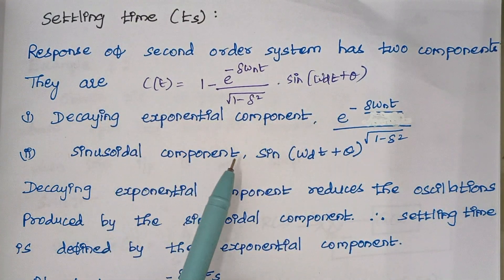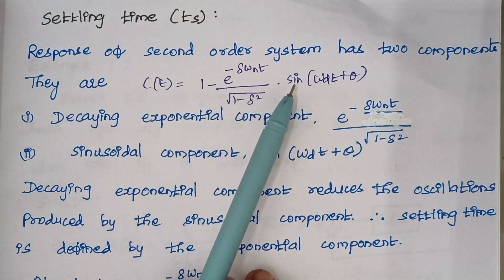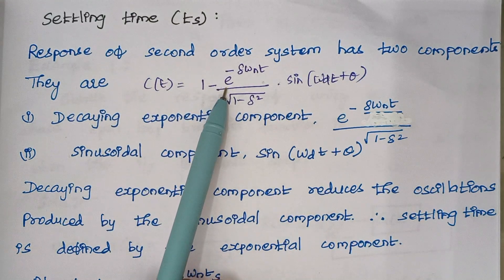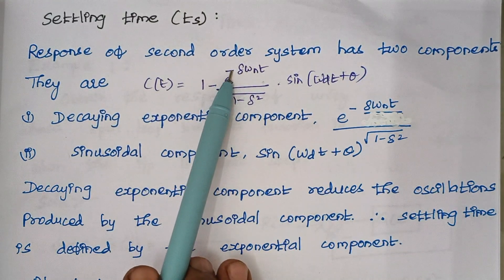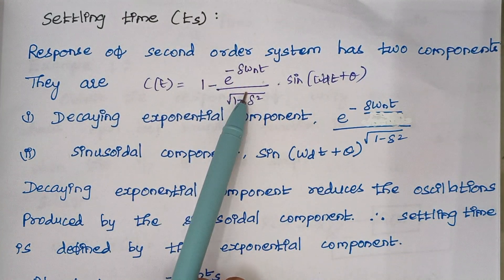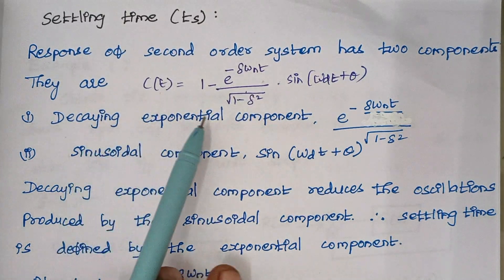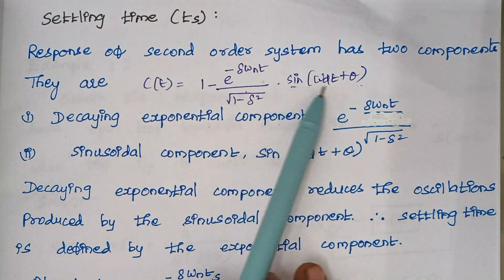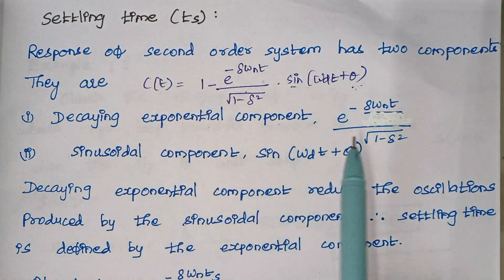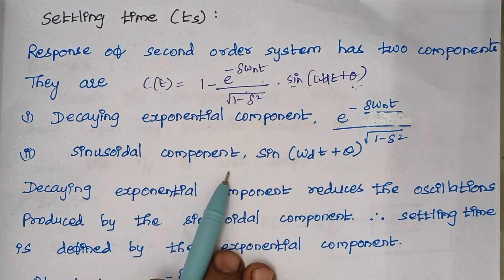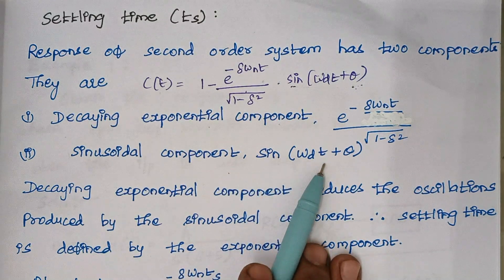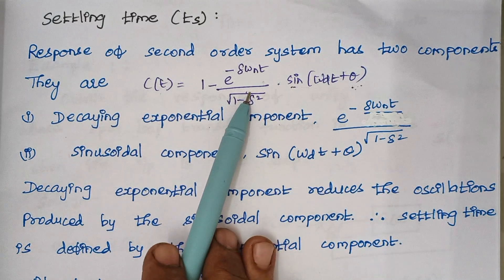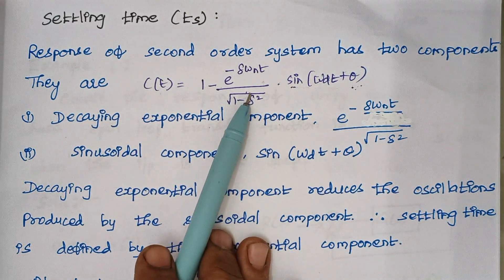When you look carefully, this expression has two components. One is the exponential component, and this exponential component is with the negative sign, so we are mentioning this one as the decaying exponential component. And the next one is a sinusoidal component, which is nothing but sine of omega_d t plus theta. Based on these two components we can define what settling time is.